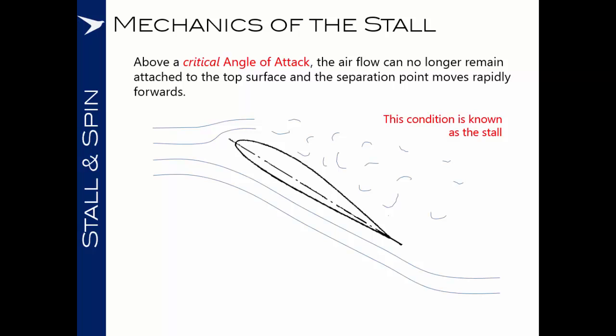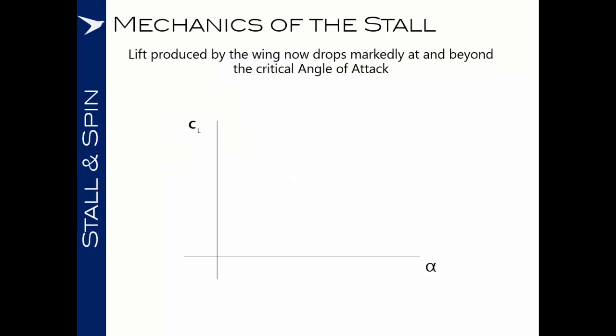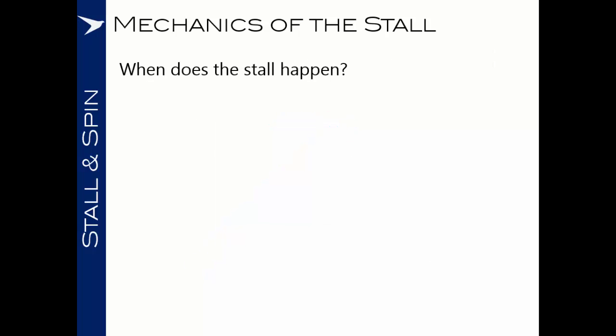The separation point moves rapidly forwards towards the leading edge. It's this condition, where the airflow is no longer attached to the top surface of the wing, that we know as the stall. As a point of general knowledge, the French term for the stall is décorchage, which means detachment — a far more explanatory term for what is occurring. At this point, the lift produced by the wing drops markedly. As we reach the critical angle of attack, that point of airflow separation, the lift produced drops rapidly.